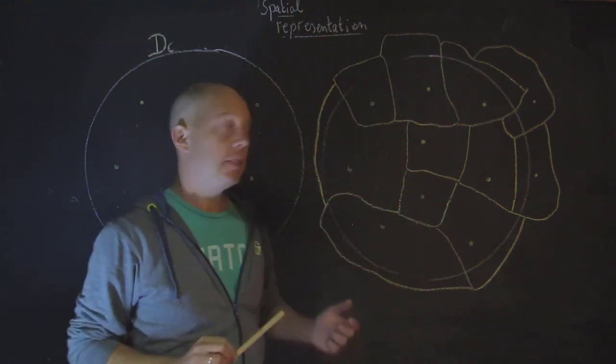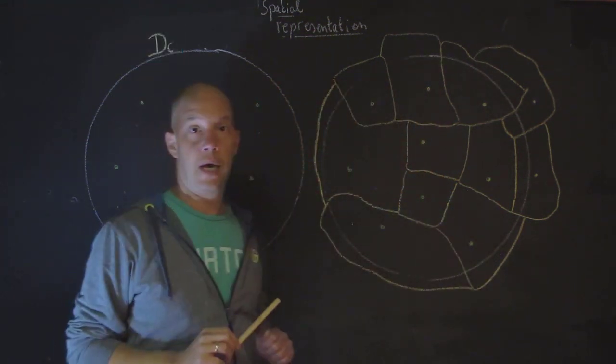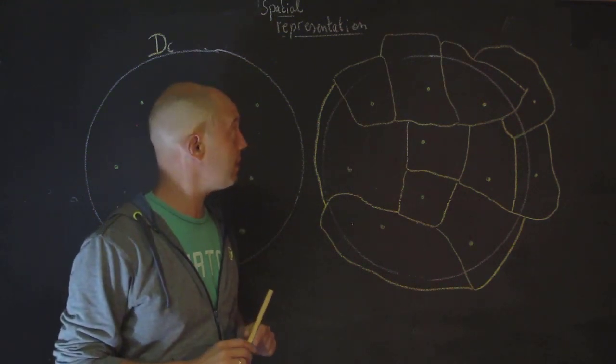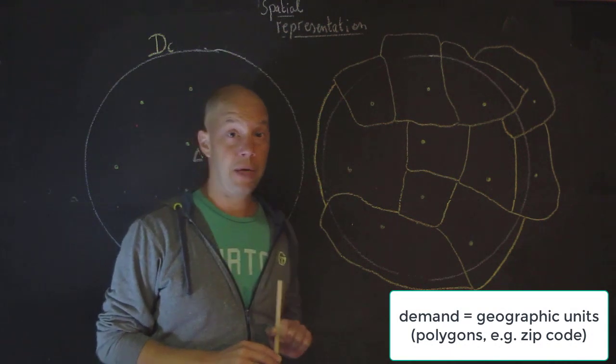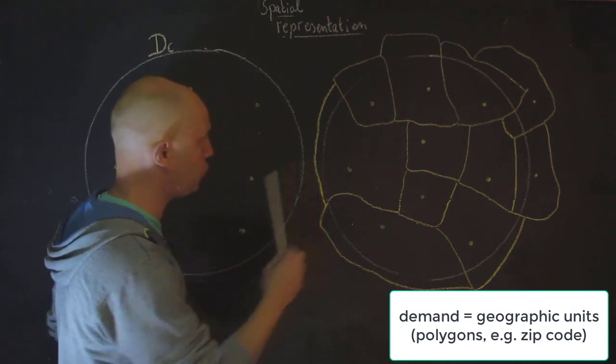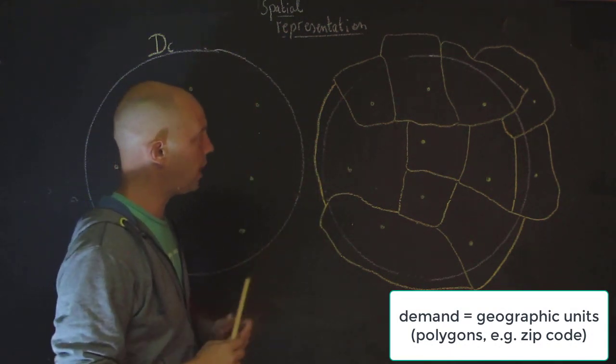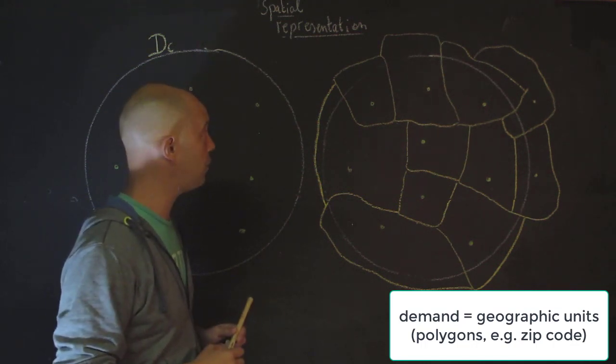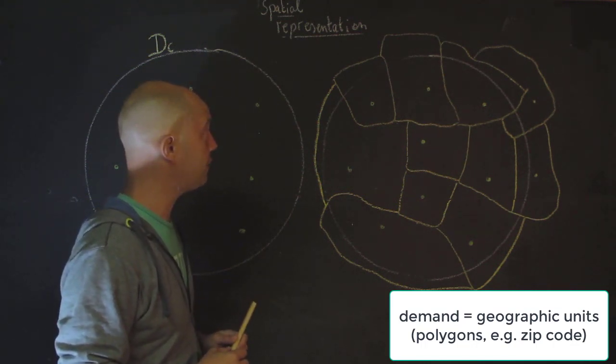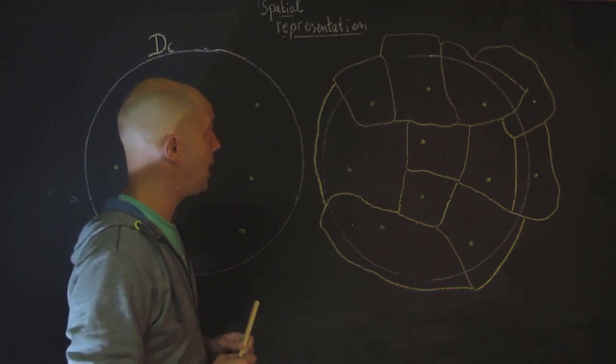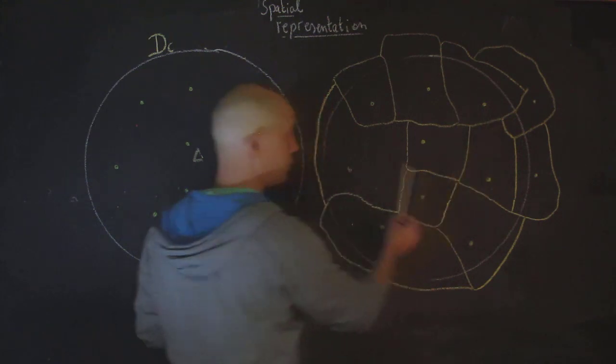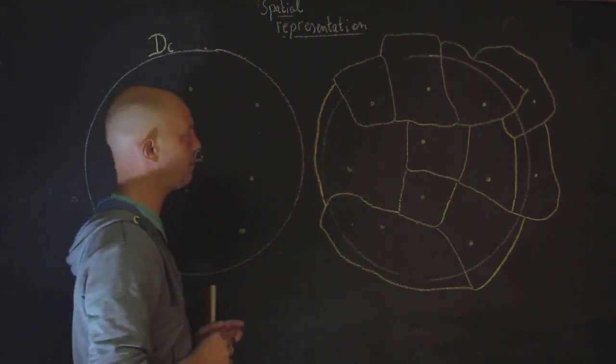In reality, we rarely have data that is so disaggregated, or it's sometimes better to actually use polygons. And this is the example to the right, where we have geographic units. This could be zip code or it could be census tract, for instance, in the US. For simplicity, I've also added the centroid, so you can compare with the example to the left.